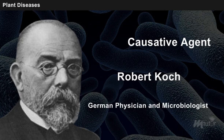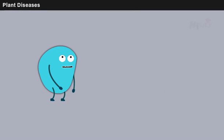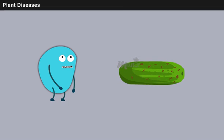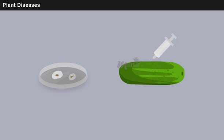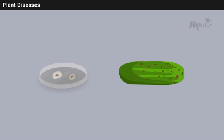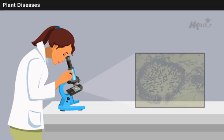To identify the causative agent of a particular disease, Robert Koch, a German physician and microbiologist, postulated four criteria: the microorganism will be present in all cases of the disease; the pathogen can be isolated from the diseased host and grown in pure culture; the pathogen from pure culture should cause the disease when inoculated into a healthy, susceptible organism; and the pathogen re-isolated from the new host should be the same as the originally inoculated pathogen.